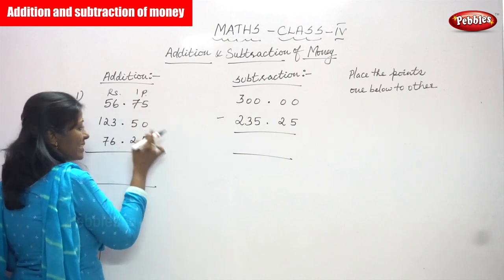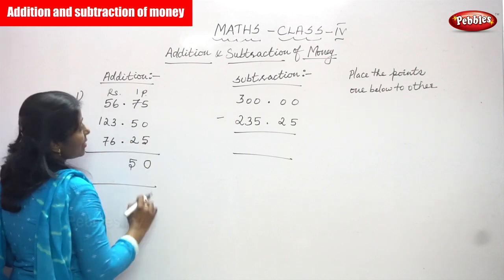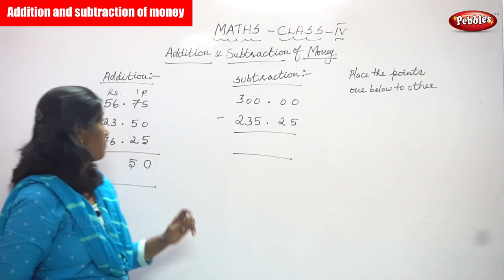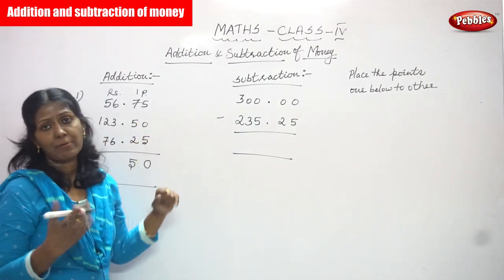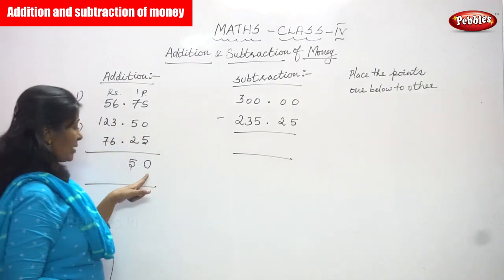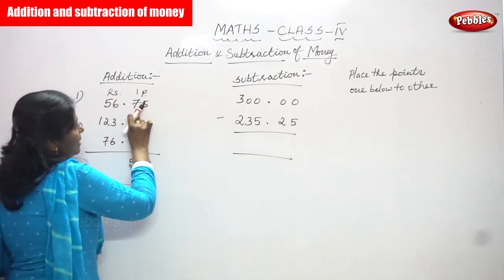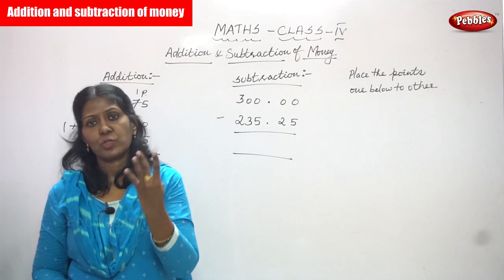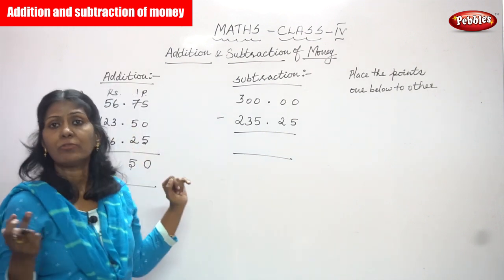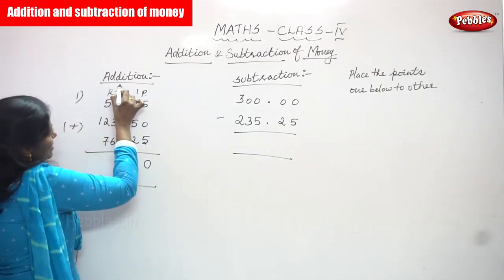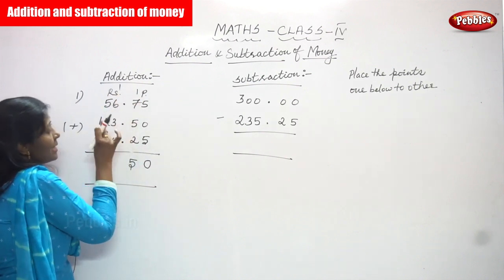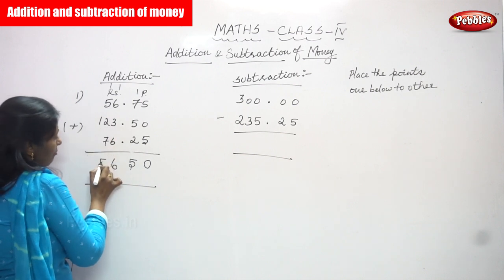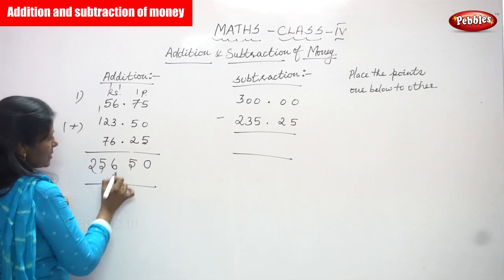Next, 1 plus 7 is 8, 8 plus 5 is 13, 13 plus 2 is 15 — write 5 and carry over 1. I'm not using fingers because I'm thorough in the concept. If you want, you can use fingers. Moving to rupees: 1 plus 6 is 7, 7 plus 3 is 10, 10 plus 6 is 16 — write 6 and carry over 1. Then 5 plus 1 is 6, 6 plus 2 is 8, 8 plus 7 is 15 — write 5 and carry over 1. Finally, 1 plus 1 is 2.